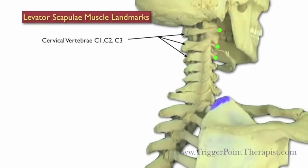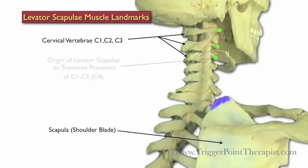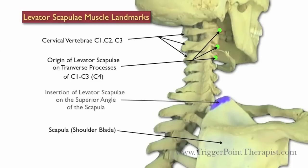Here are the landmarks for the levator scapula. First, we have the cervical vertebrae and the scapula. The origin of the levator scapula is on the transverse processes of C1 through C3, and sometimes C4, and it inserts on the superior angle of the scapula.